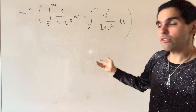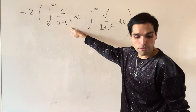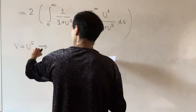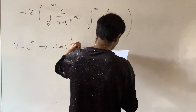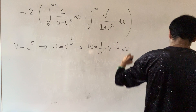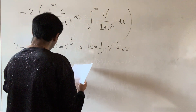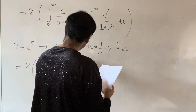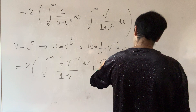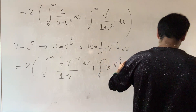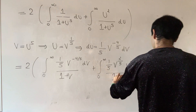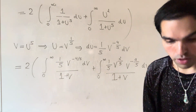Here we'd like to use another u-substitution: v equals u to the fifth, to simplify. If v is u to the fifth, then u is v to the one-fifth, and du is one-fifth v to the minus four-fifths dv. We get two times the integral from zero to infinity of one-fifth v to the minus four-fifths dv over one plus v, plus the integral from zero to infinity of one-fifth v to the two-fifths times v to the minus four-fifths dv over one plus v. This substitution gets rid of the powers in the denominator bottom.